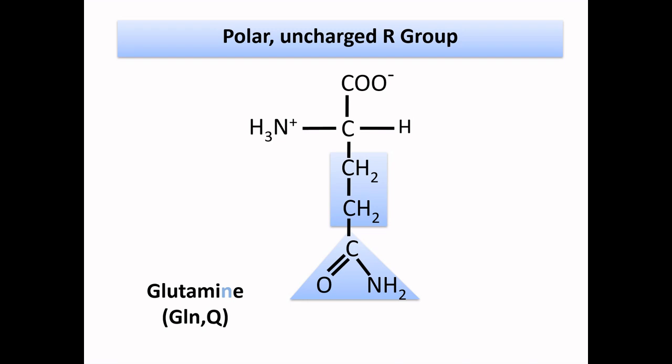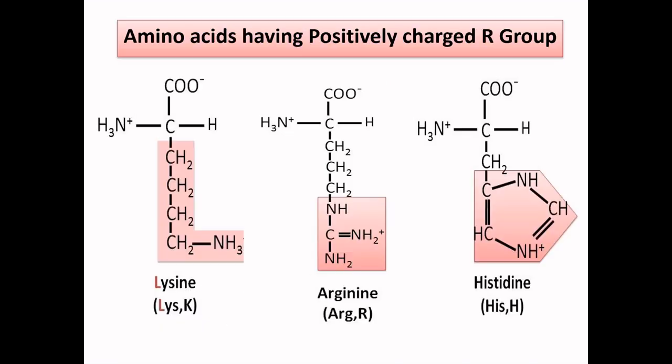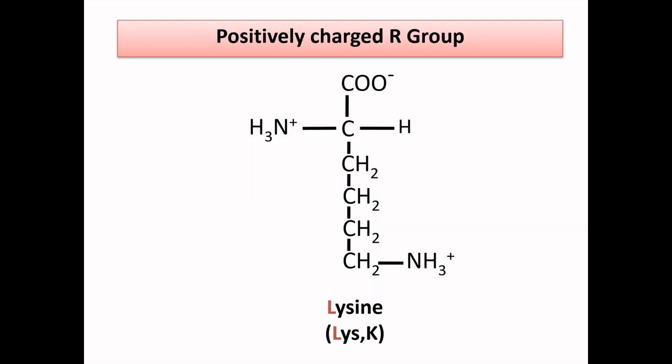Now let's move to our fourth group — amino acids having positively charged R group. This group contains three amino acids: lysine, arginine, and histidine. These amino acids have an amino group in their side chain, which is why they are positively charged. Lysine has one amino group attached to its side chain which gives it an L-shaped structure, so remember this L-shaped structure as lysine.